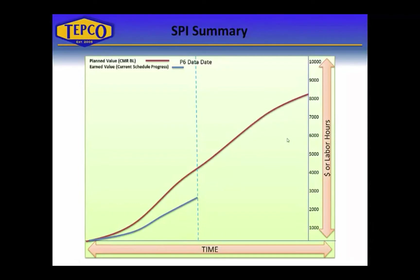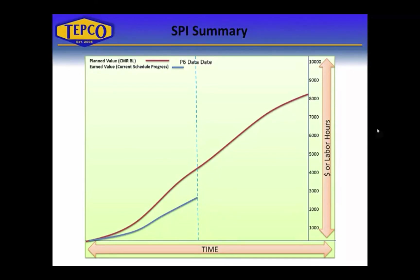To summarize, all we need in an S-curve are the two points: the earned value as of the data date and the planned value as of the data date. Those two figures give us SPI. Now I'm going to take you into P6 and show you how you can use SPI to drill down from the top of a project all the way down into detailed activities to find areas of concern.